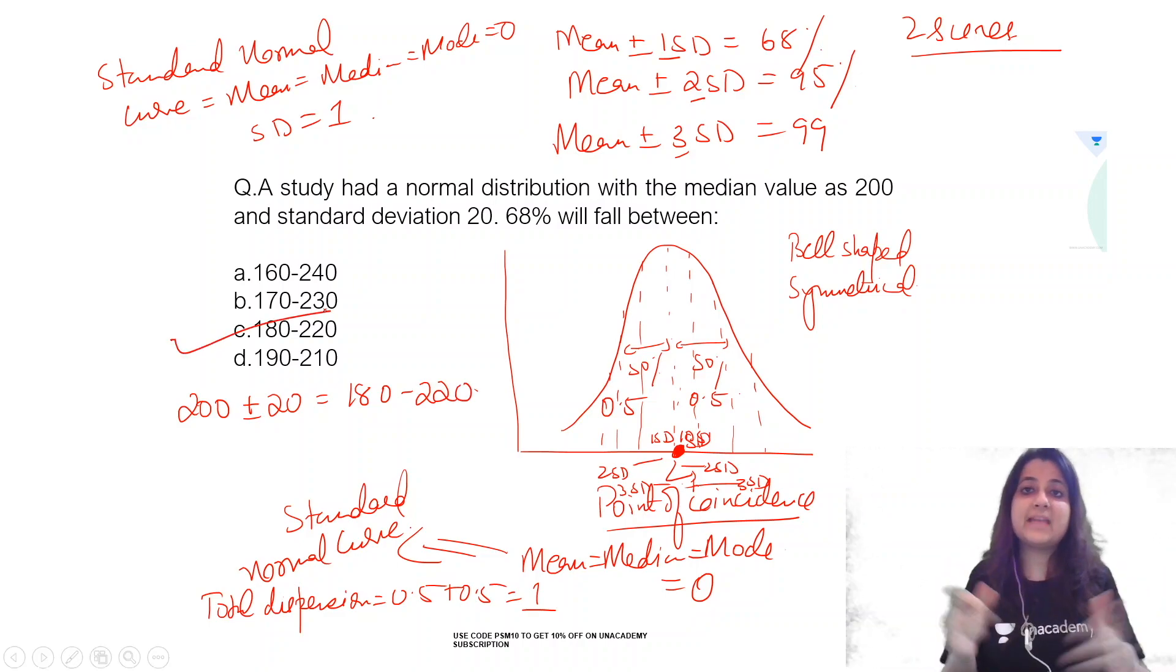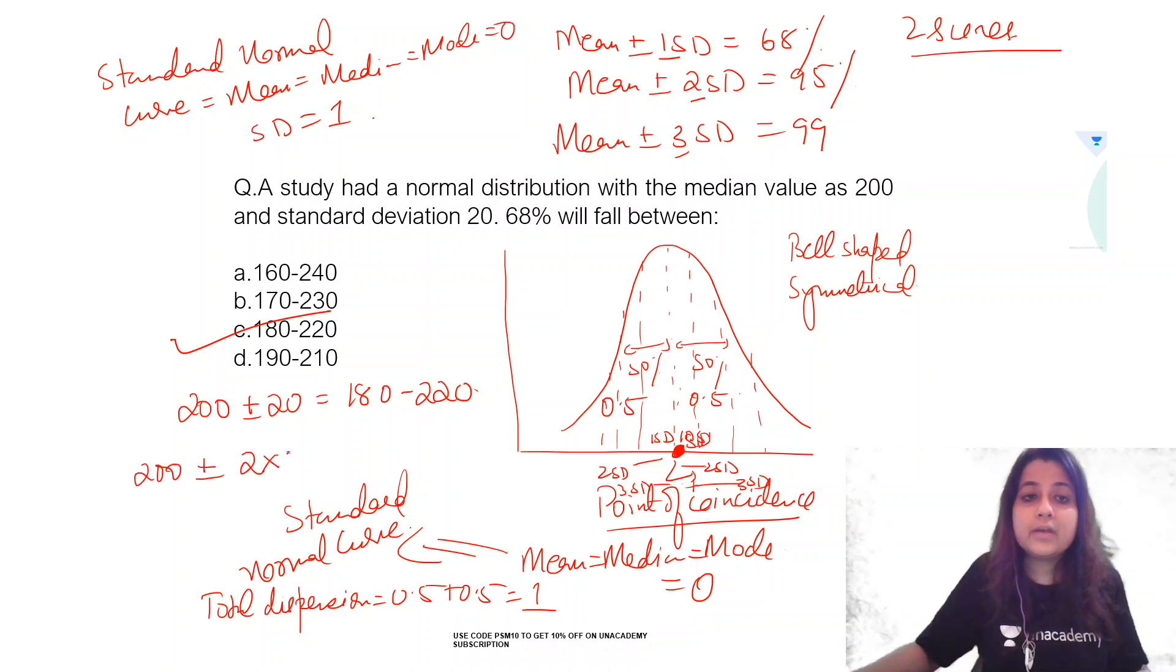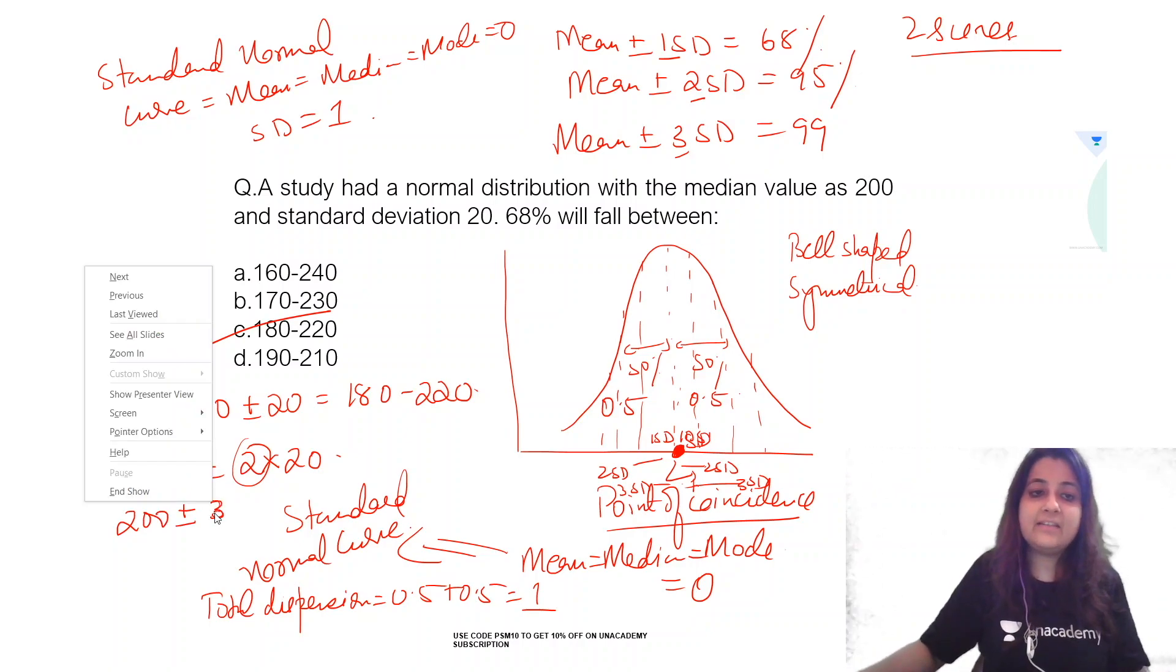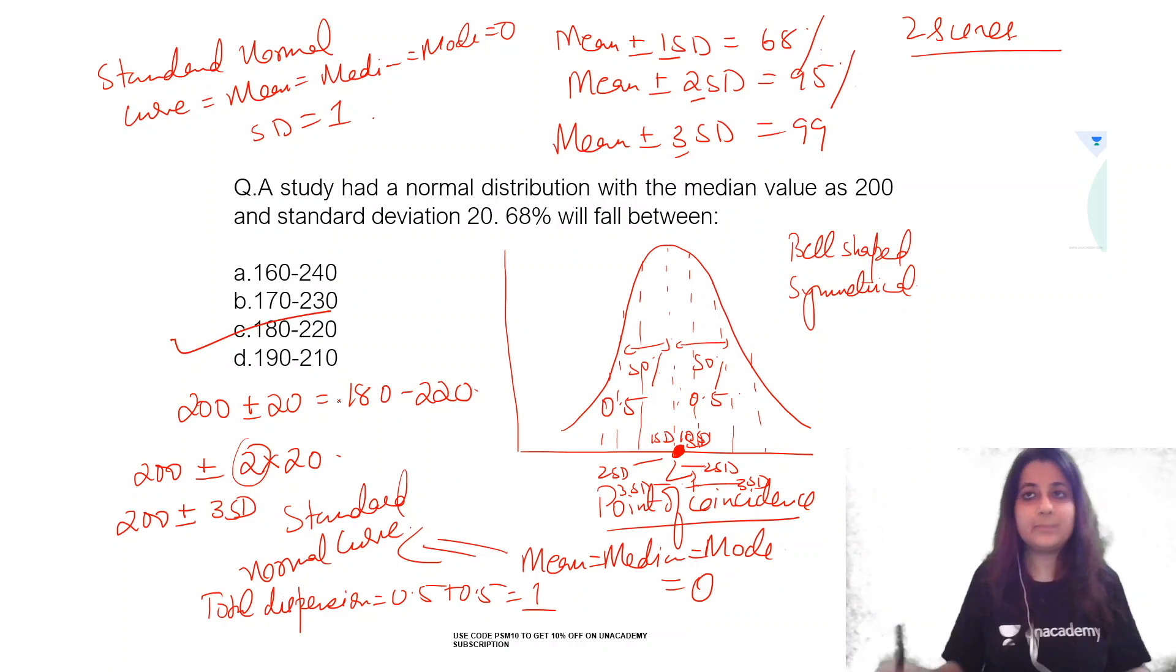If it was asked mean plus minus 2 SD, then you would have done 200 plus minus 2 into 20, because it is 2. If it was 3, then you would have done 200 plus minus 3 into 20. I hope you understood this, thank you so much for watching.